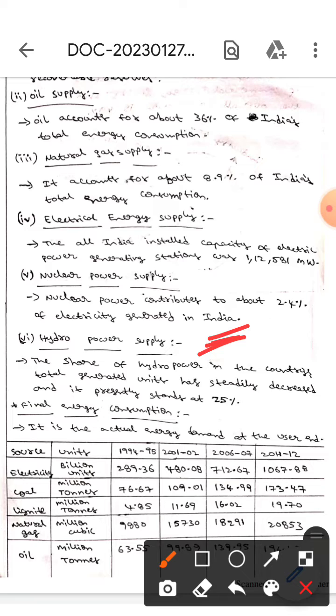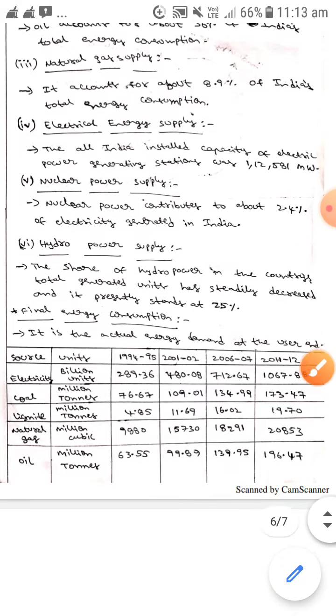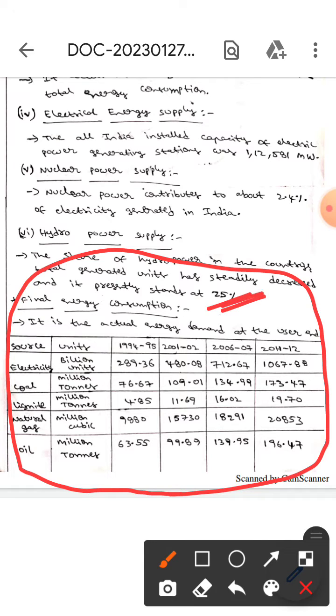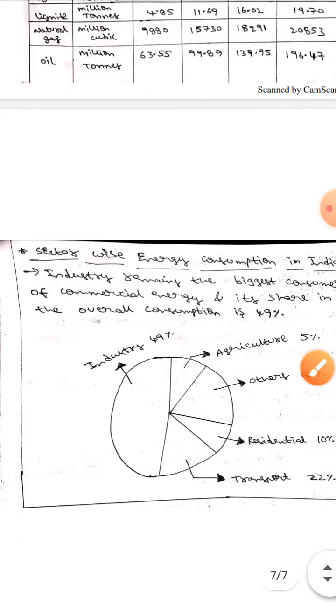If you observe this table form, this table form represents the final energy consumption. It is the actual energy demand at the user end.